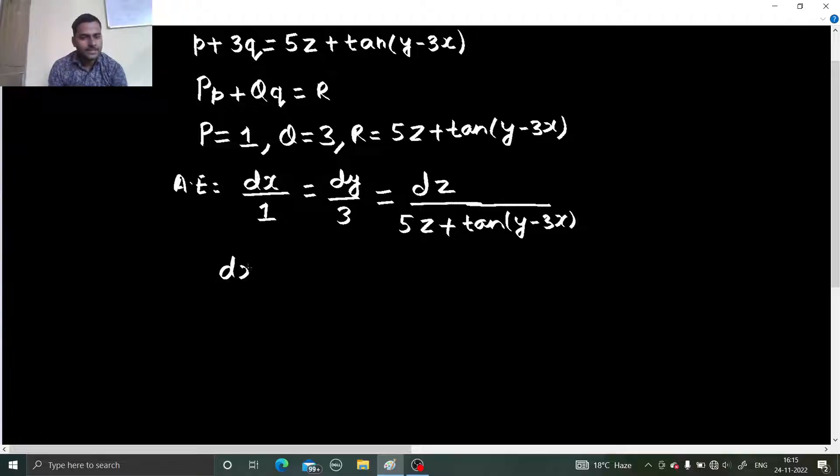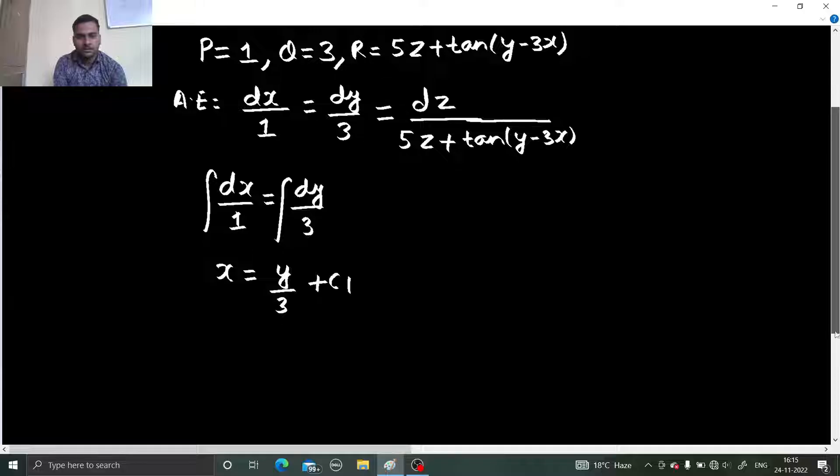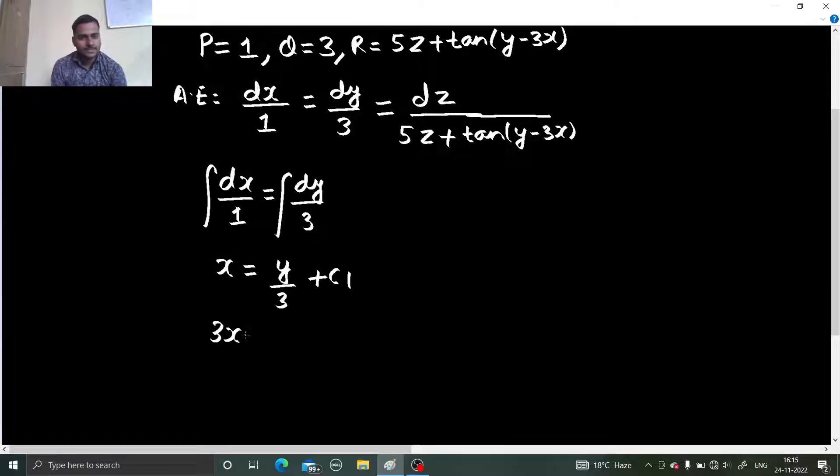So dx by 1 equals to dy by 3. Simply integrate them. You are getting x from this side and y by 3 from the other side plus c1. So you are getting 3x minus y equals to 3c1.